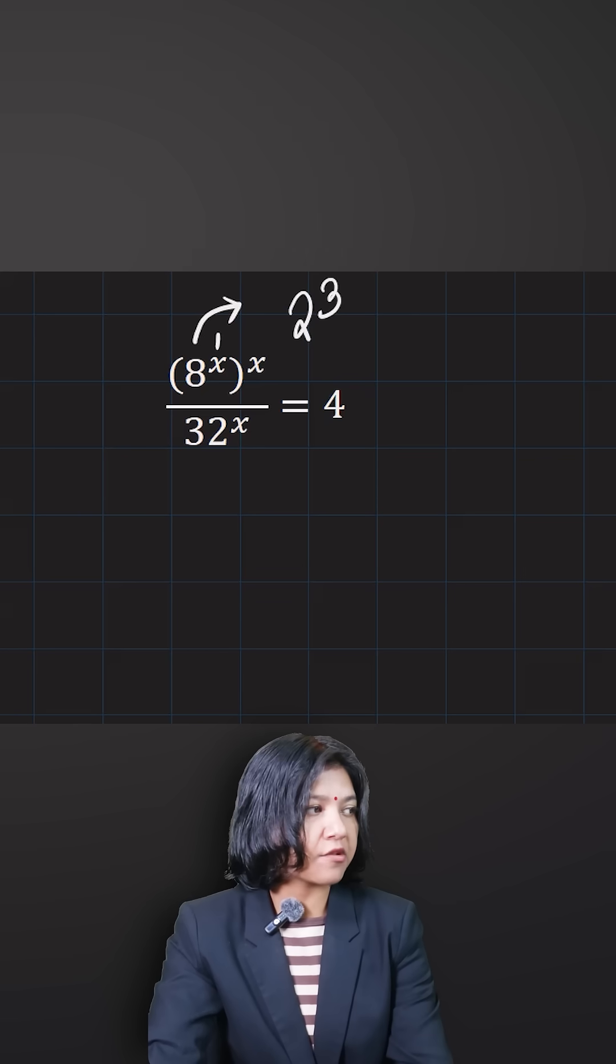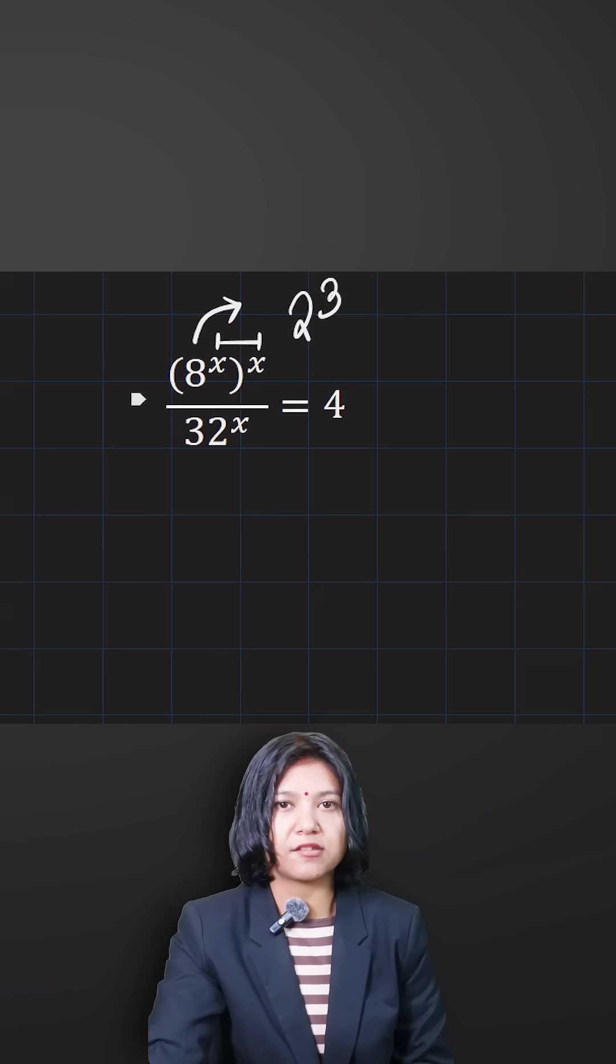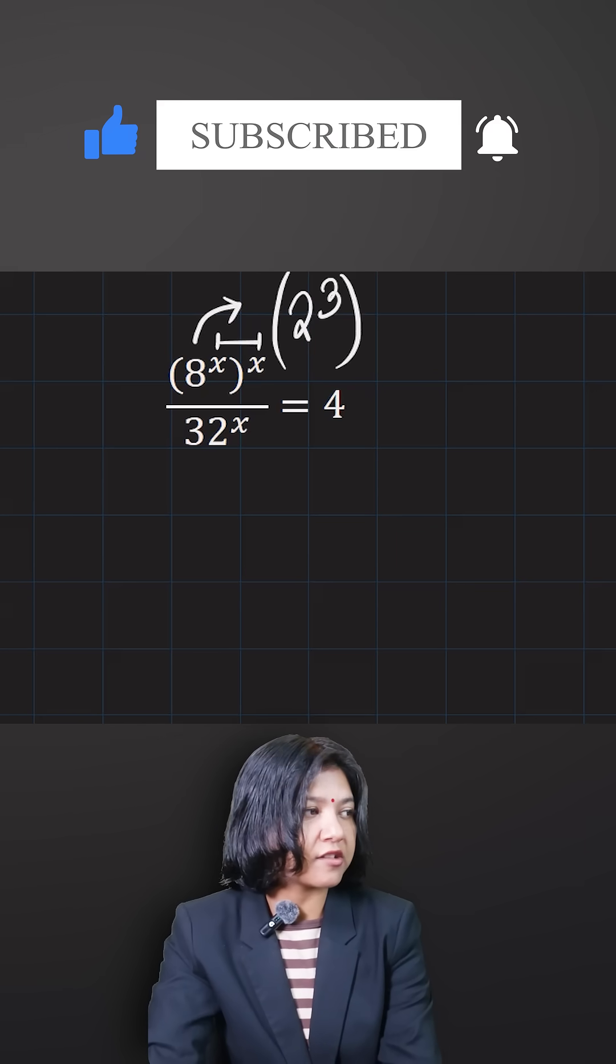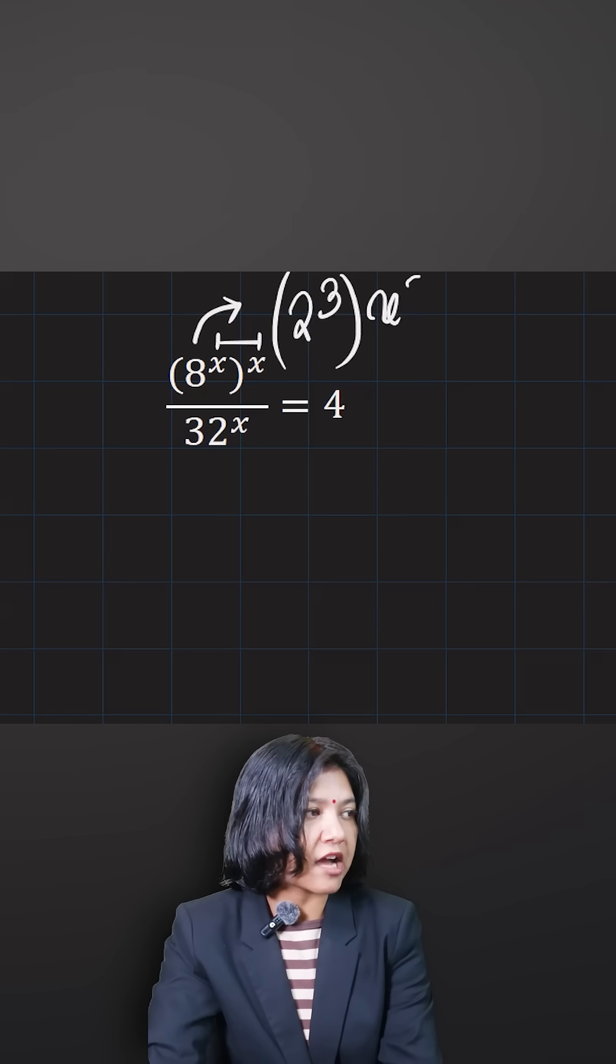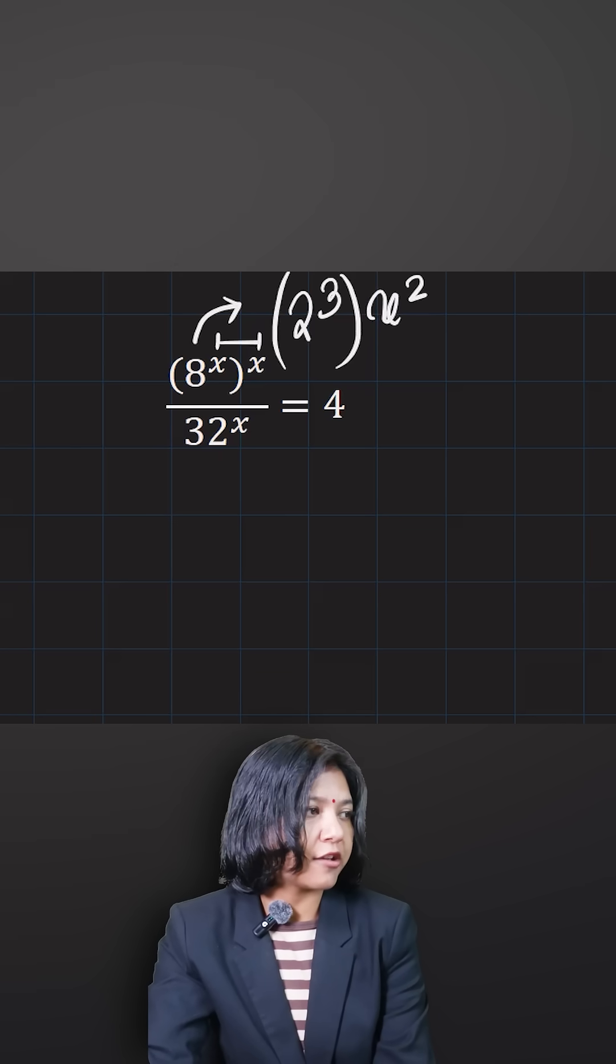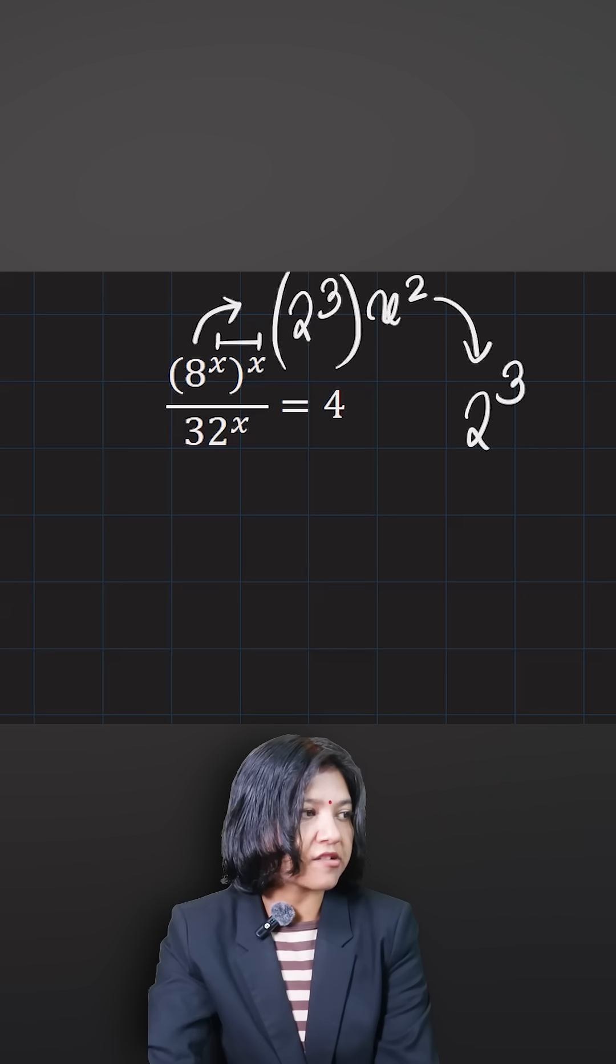Now there are two powers already interacting with each other: x times x, which is x squared. What you do is make sure that the power x squared is now multiplied with the new power you got inside. The other way you write this term would be 2 to the power of 3x squared.